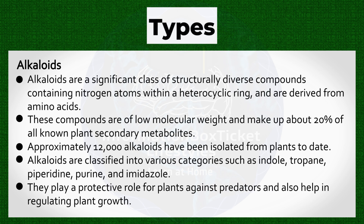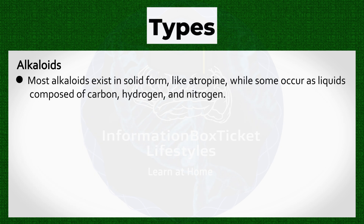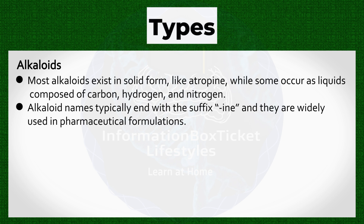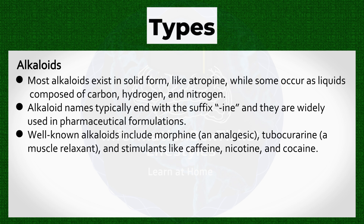Alkaloids play a protective role for plants against predators and also help in regulating plant growth. Most alkaloids exist in solid form, like atropine, while some occur as liquids composed of carbon, hydrogen, and nitrogen. Alkaloid names typically end with the suffix "-ine", and they are widely used in pharmaceutical formulations. Well-known alkaloids include morphine, an analgesic, tubocurarine, a muscle relaxant, and stimulants like caffeine, nicotine, and cocaine.